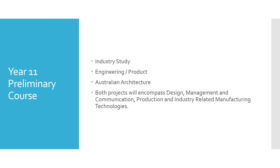The Year 11 preliminary course will involve studies such as an industry study, where you focus on a particular company within the Australian market and undertake a deep study and report on it. The engineering a product project is currently seeing Year 11 students design a deck chair. They will also move to Australian architecture, where they will design a house with an Australian architectural theme. Both projects encompass design management, communication, production, and industry-related manufacturing — all vital points within the preliminary course.